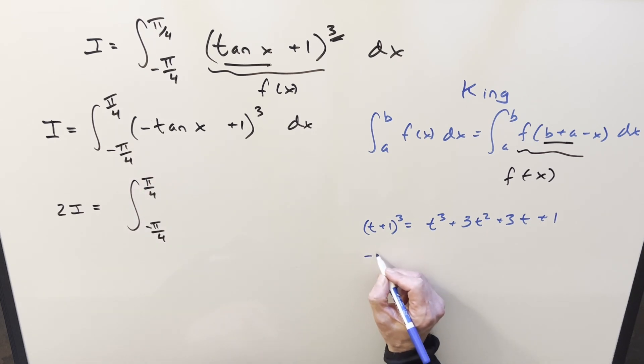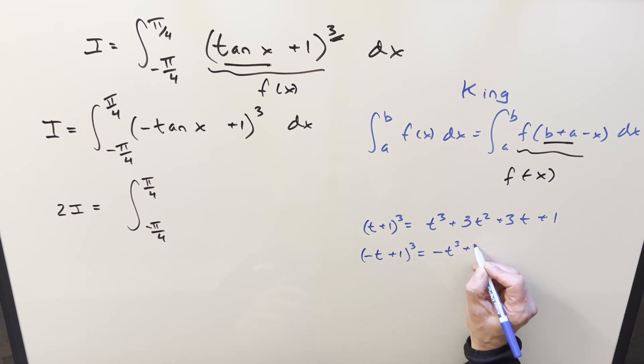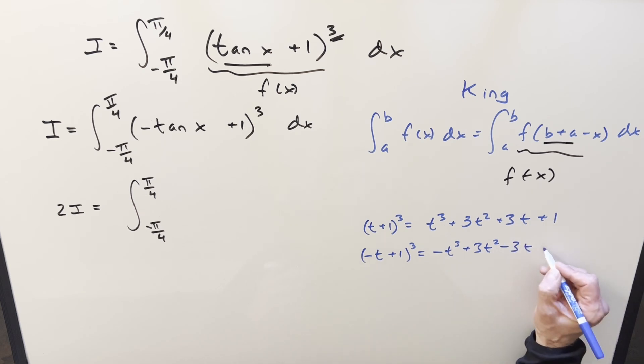And then expanding out this one, just a little different, we have minus t plus 1 cubed. Same kind of thing, but we have this minus sign on all the odd terms, so it's going to be minus t cubed. The even terms are going to be positive, so it's just going to look like this.